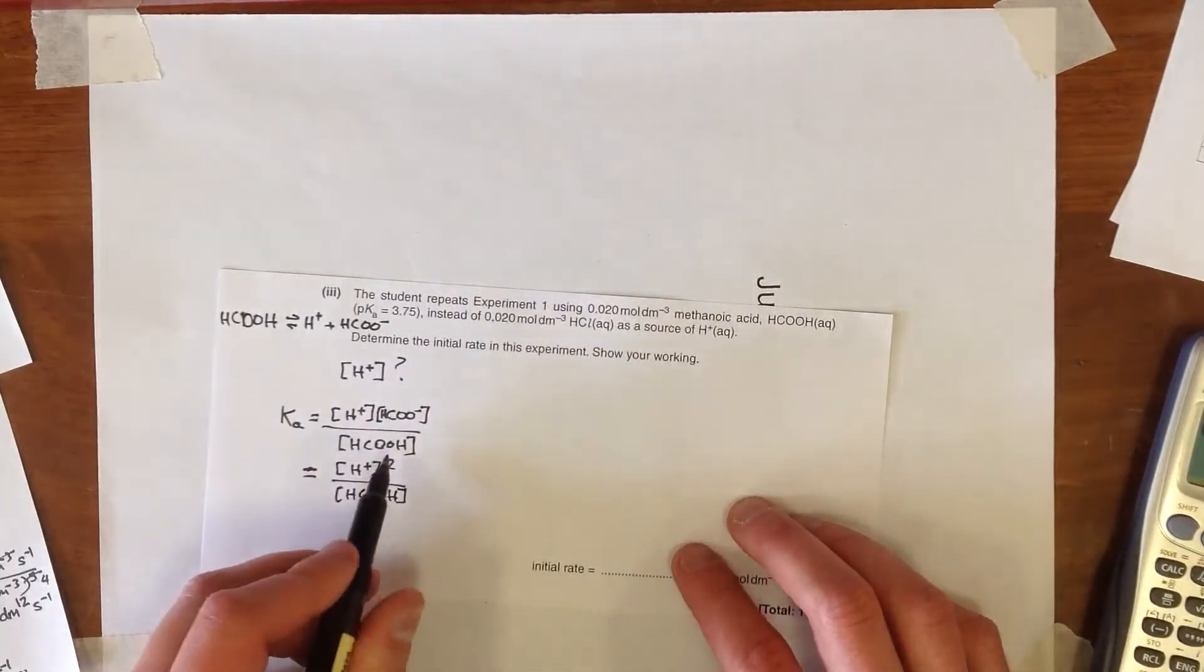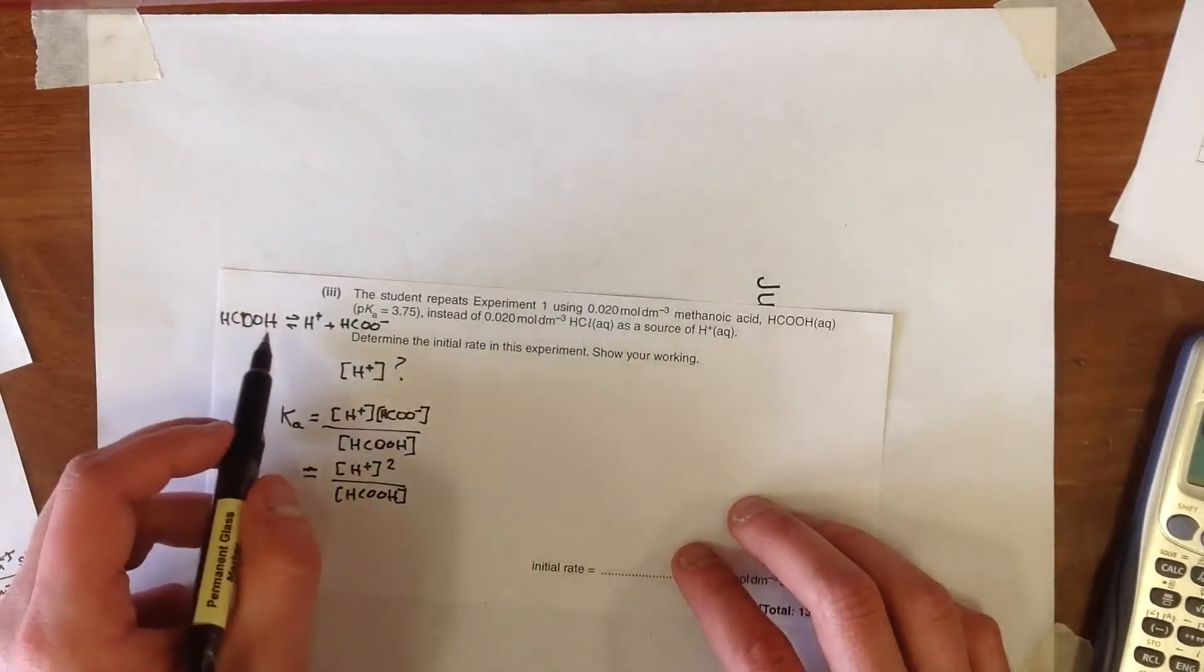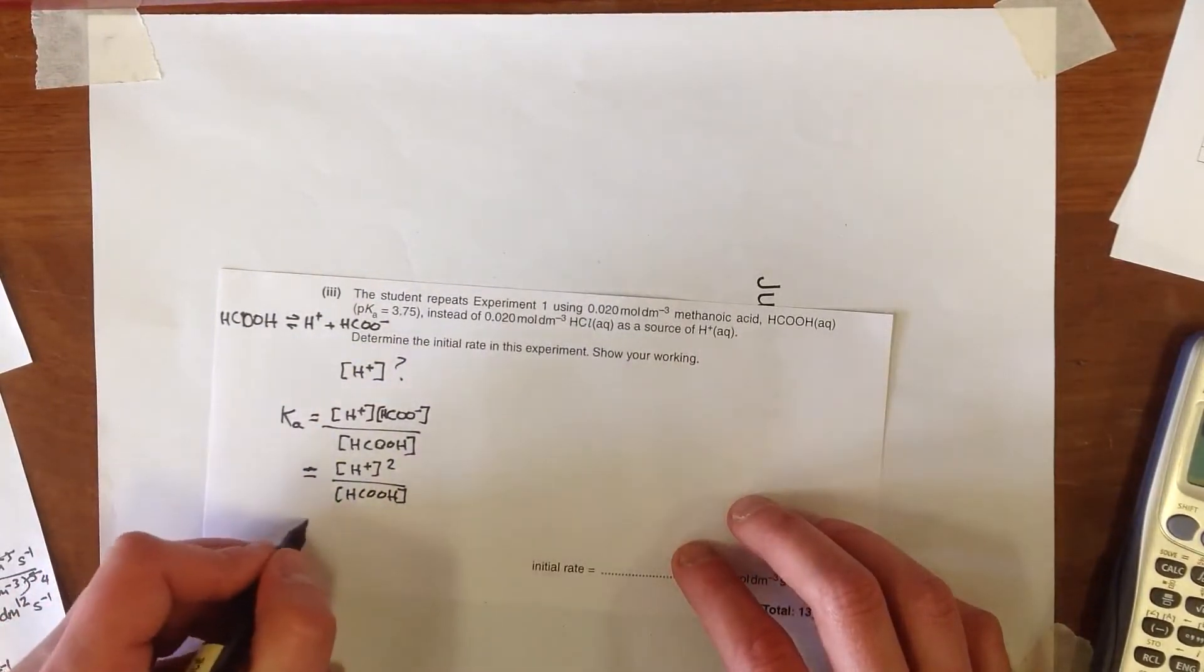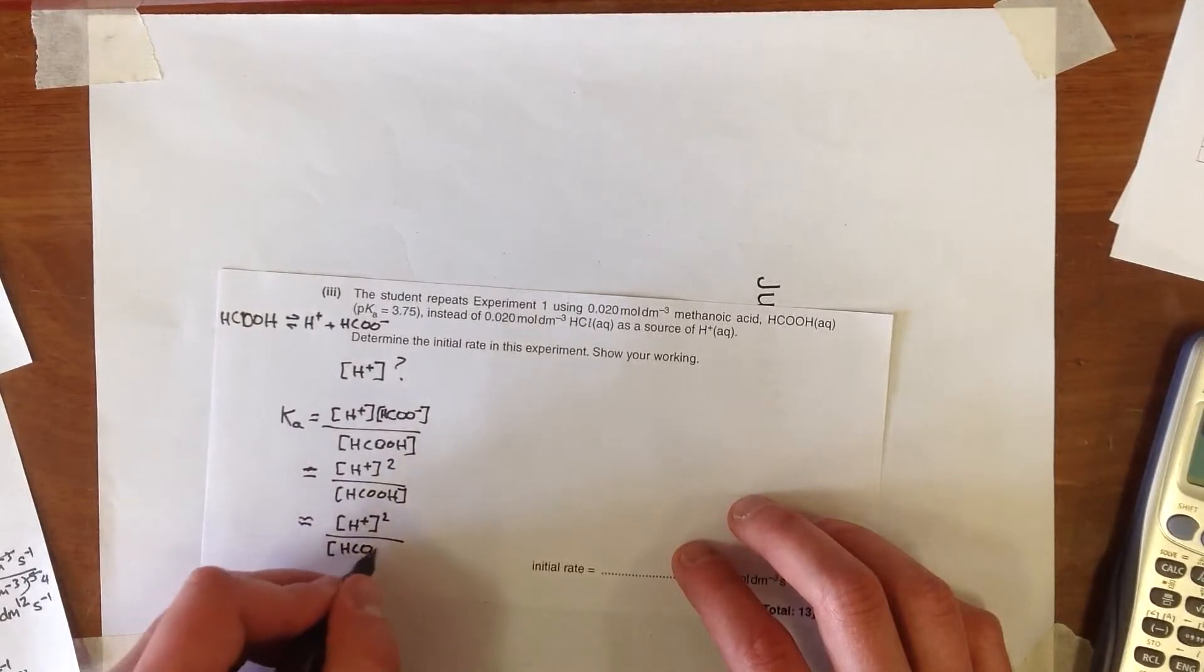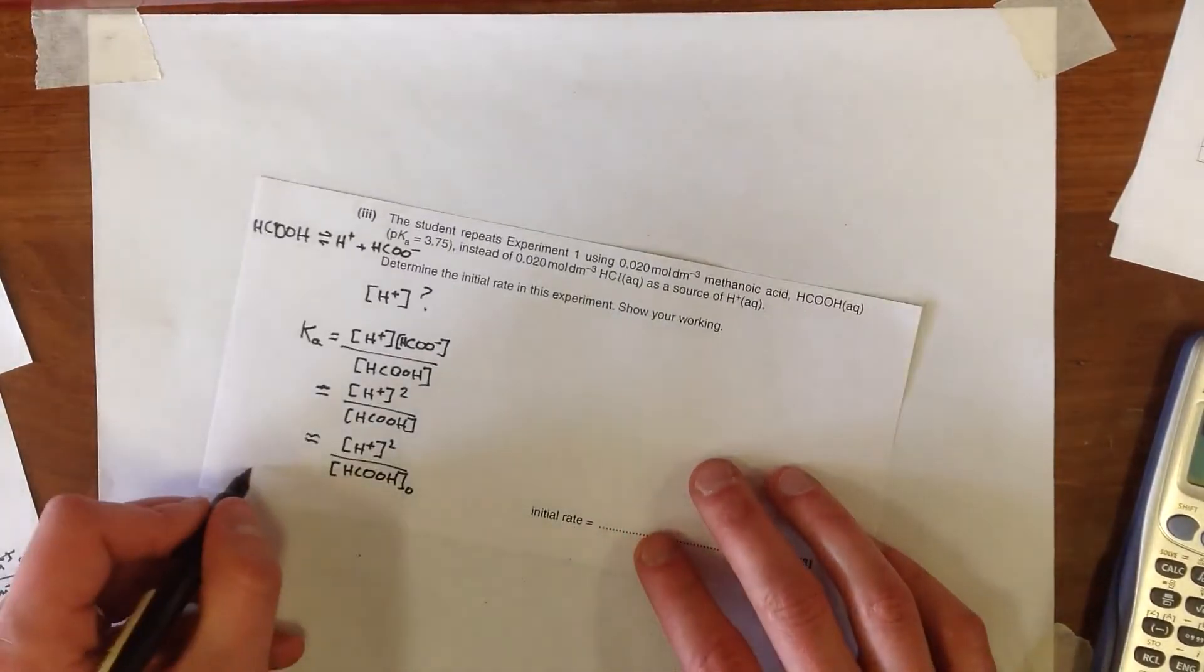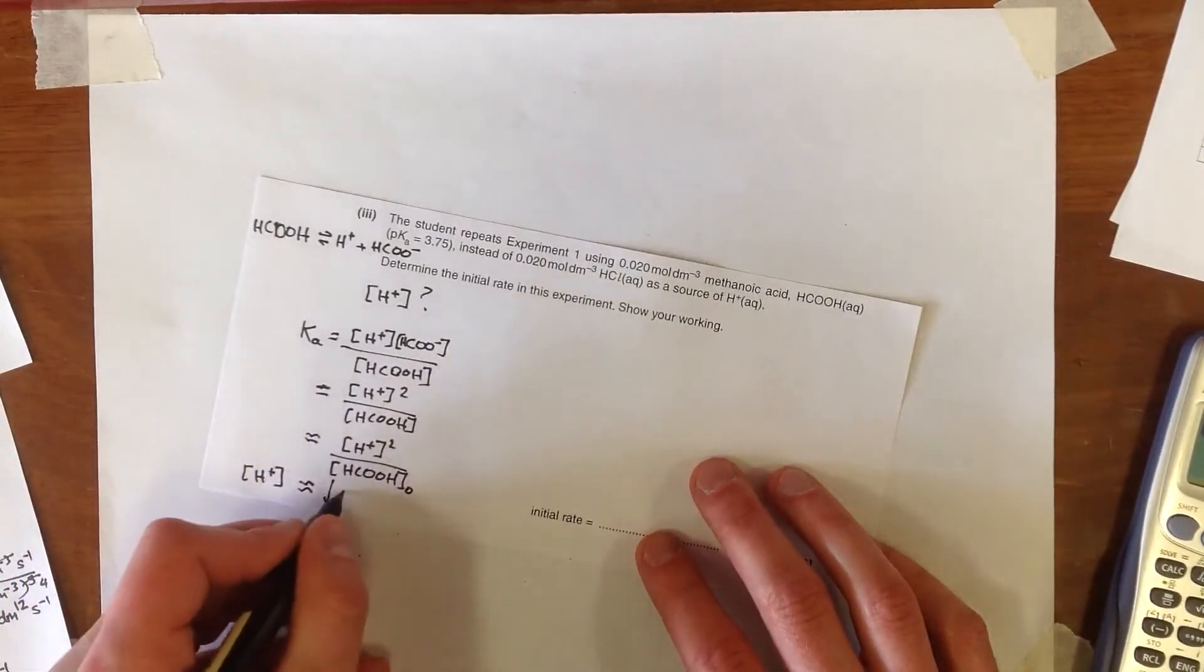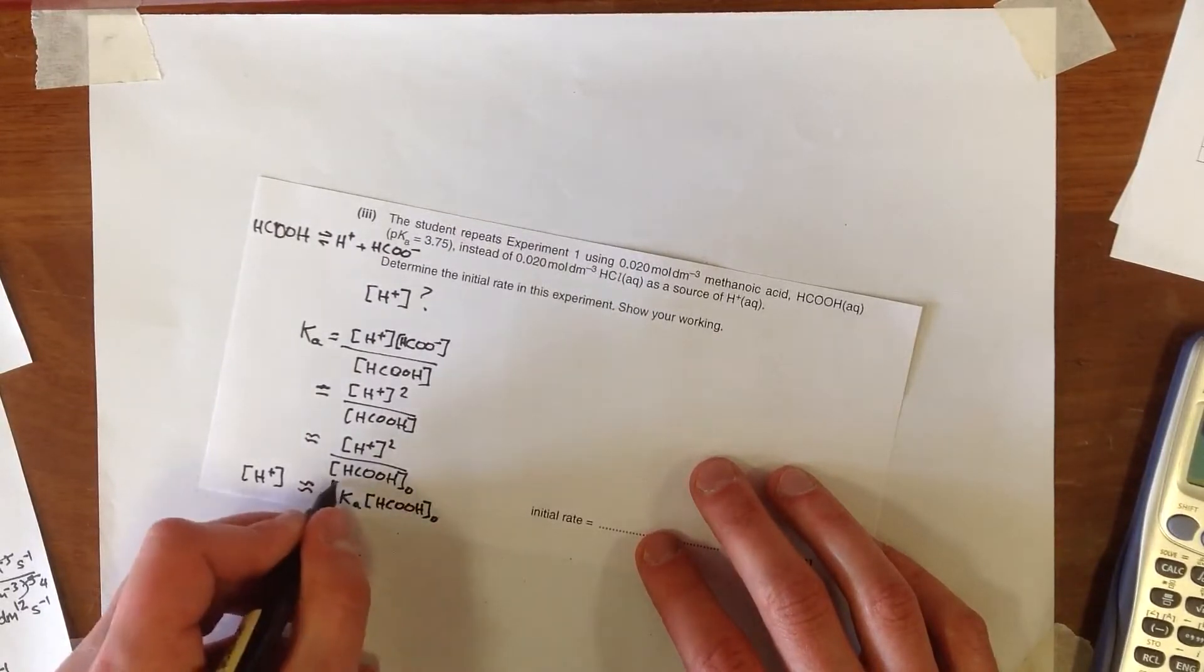Now, remember that this is the concentration of the undissociated acid at equilibrium, but actually, because it's a weak acid and the percentage of dissociation is very small, we can actually write that as the initial concentration that we used. So I'm putting in approximately equal to, because it is only approximately equal. Now, we can rearrange this expression here to give us H+, is approximately equal to the square root of Ka, times HCOOH, all to the zero.